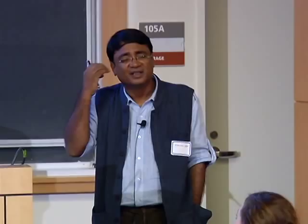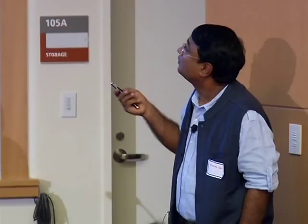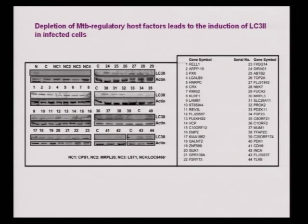Subsequently, autophagy has been implicated in a whole range of diseases, including diabetes and cancer. Importantly, autophagy has also been shown to have the ability to clear intracellular infections. What these 44 molecules represent are novel regulators because their role in autophagy had not yet been anticipated. It turns out all 44 are negative regulators of autophagy, and what mycobacterium does is exploit them — somehow controlling them in order to block the activation of autophagy by the infected macrophage.